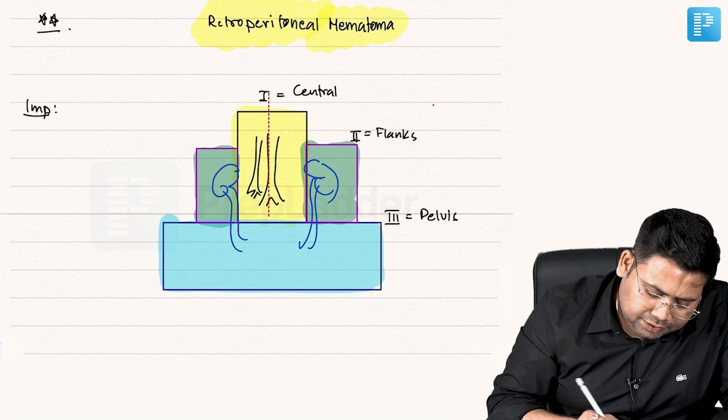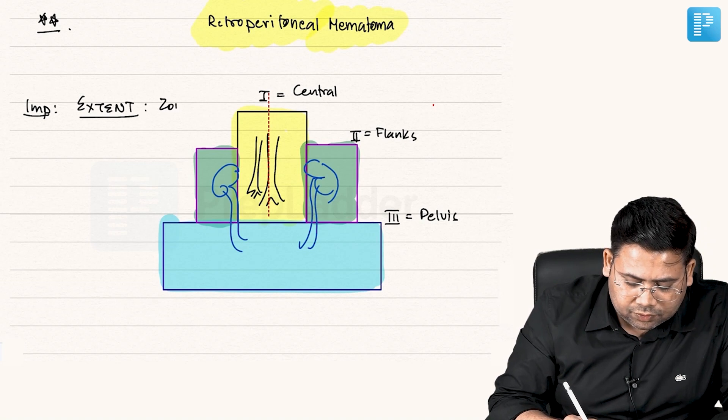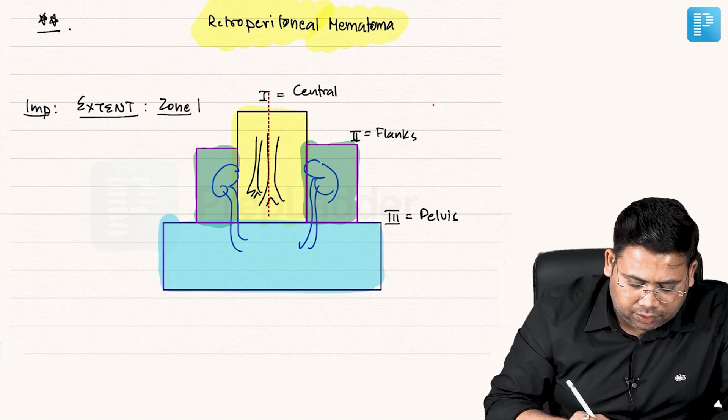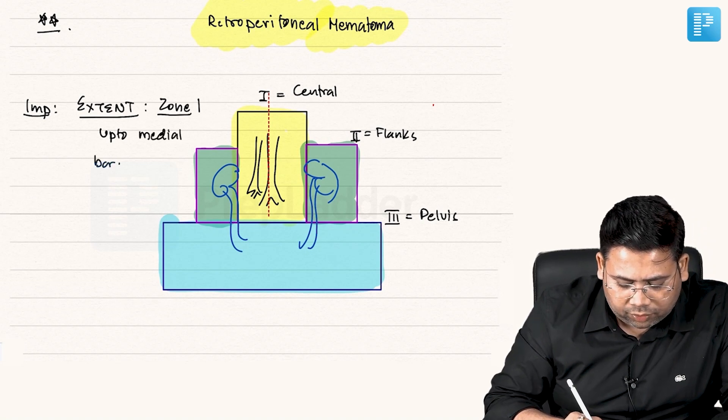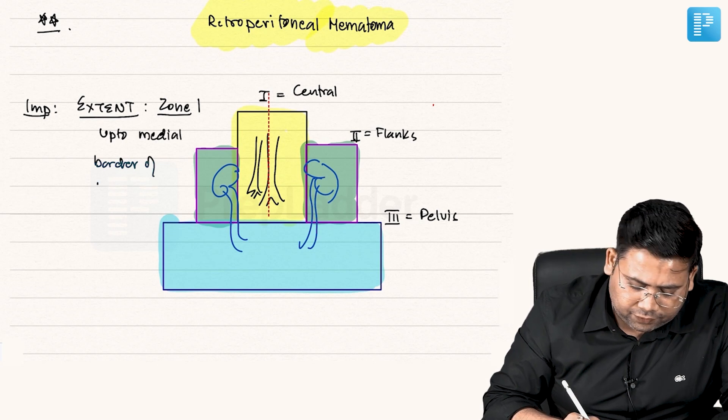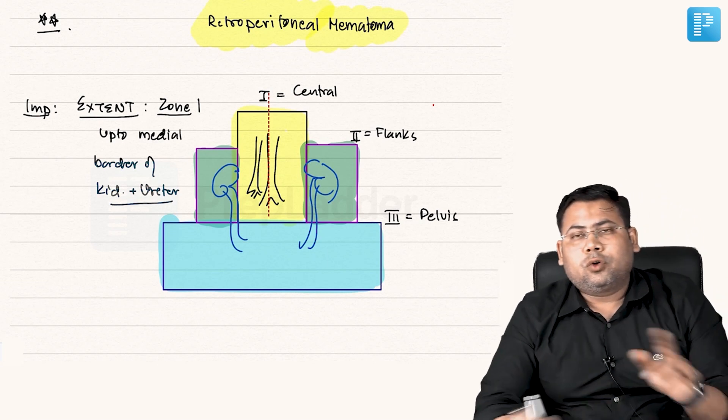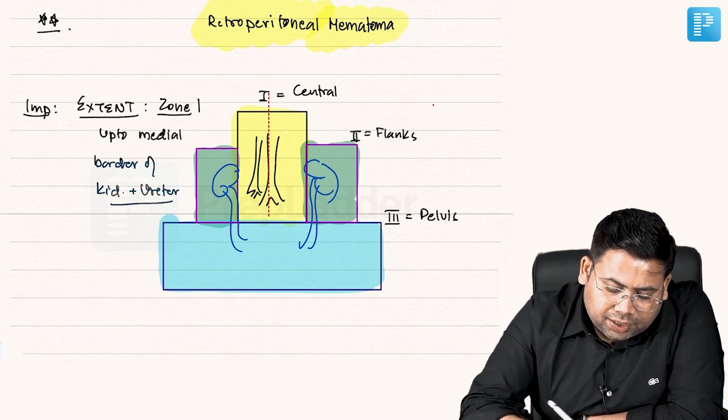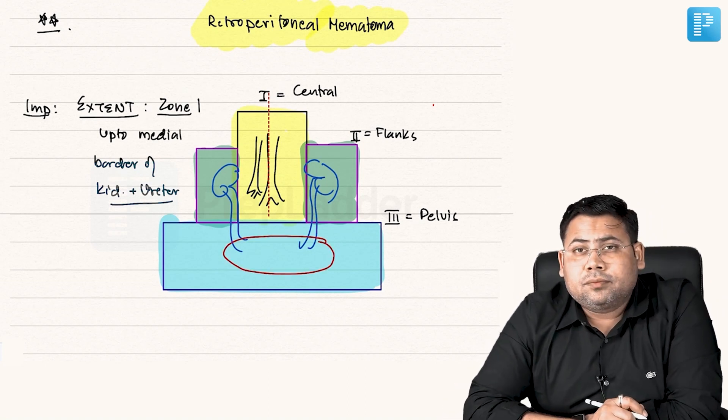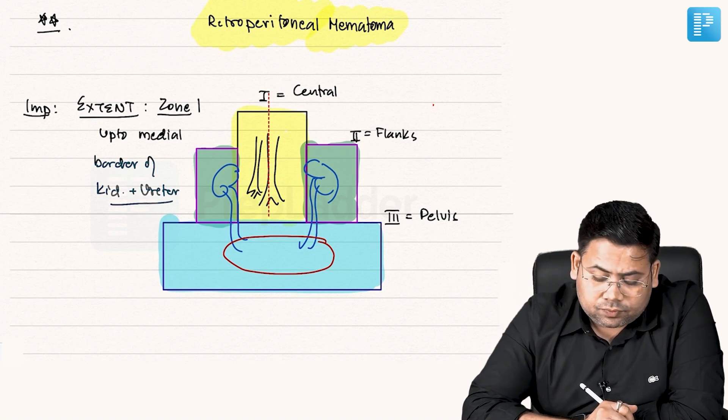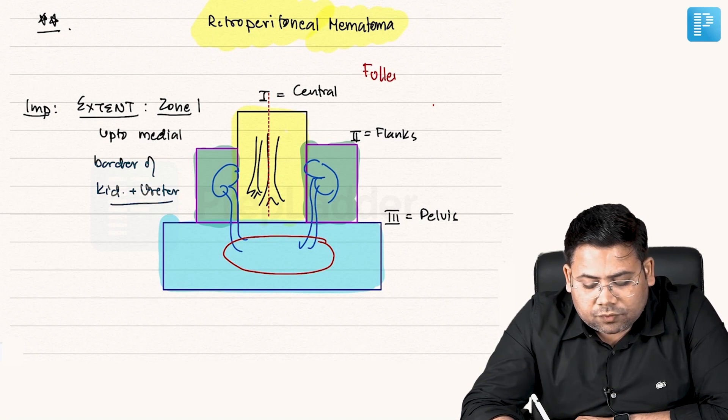Important thing that we all should know is the extent of Fulence zone. Zone one, the extent is up to medial border of kidney plus ureter, abdominal ureter. Zone two contains your kidney and ureter. Zone three contains your pelvic organs, bladder and the pelvic part of ureter also. This zone-based concept is known as Fulence zone.